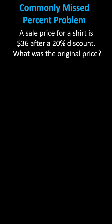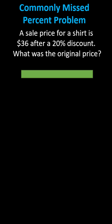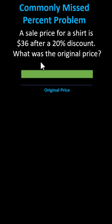Let's model this using a tape diagram where the length of the tape represents the original price. Because there's a 20% discount, we'll divide this into two parts — where the percent on the left would represent the 20% discount, which means the percent on the right would be the percent of the original price that's actually paid.